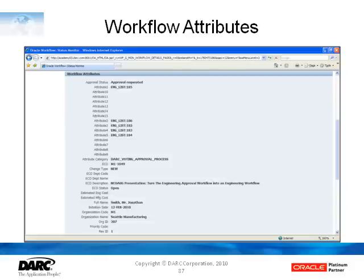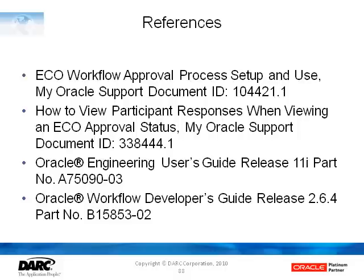The attribute one through five that we use — we can see here they're populated — they don't actually have the approval list names in them, they have the roles that those lists resolve to. That's something we need to be cognizant of in the setup of the flex field: we store the role even though on the screen the role means nothing to us; we really want to see the approval list and its description.